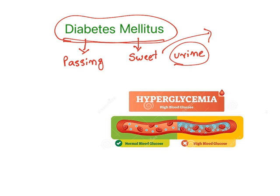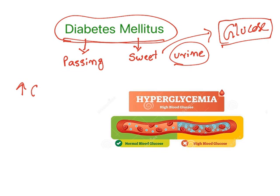Why sweet? Because there is a lot of glucose in their urine. And the reason why a lot of glucose is passing through urine is there are increased levels of glucose in the blood.